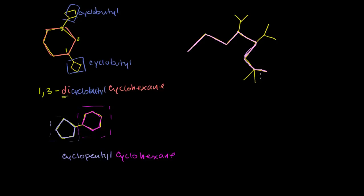We want to start numbering in the direction so we encounter the first attached groups first. So we start numbering down here because we have groups attached right on the 2-carbon. If we started from the other end, we'd have to go pretty far before something's attached. So we go 1, 2, 3, 4, 5, 6, 7, 8. So we know we're dealing with an octane — all single bonds, not a cyclo-octane, not in a cycle. So we're dealing with octane.